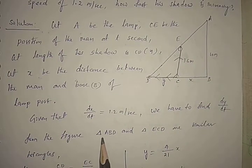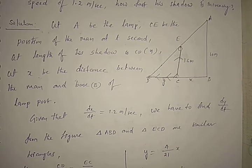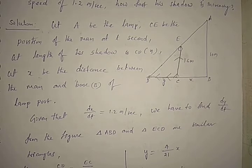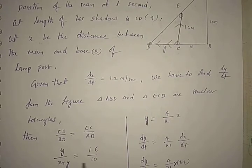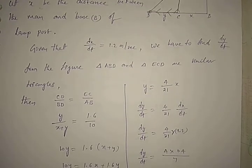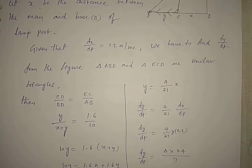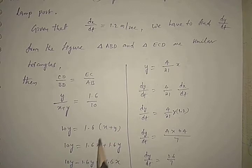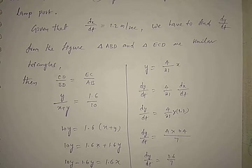From the figure, triangles ABD and ECD are similar triangles. So CD/BD = EC/AB. CD is Y, BD is X plus Y, EC is 1.6, and AB is 10. So Y/(X+Y) = 1.6/10. Cross multiplying: 10Y = 1.6(X + Y), so 10Y = 1.6X + 1.6Y, giving 10Y minus 1.6Y = 1.6X, so 8.4Y = 1.6X.